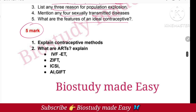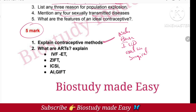For 5-mark questions, a direct question is to explain contraceptive methods. The methods to explain are: natural methods, barrier methods, IUDs, oral contraceptives, and surgical methods — five methods in total.